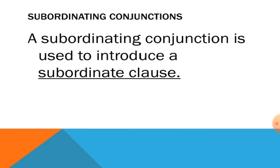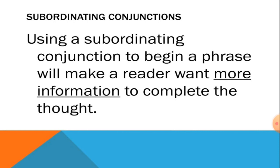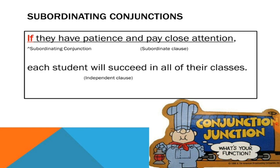Now let us see subordinating conjunctions. A subordinating conjunction is used to introduce a subordinate clause. A subordinate clause means a dependent clause, which has to depend on an independent clause for its meaning. Using a subordinating conjunction to begin a phrase will make a reader want more information to complete the thought — it is dependent on some other phrase or clause.